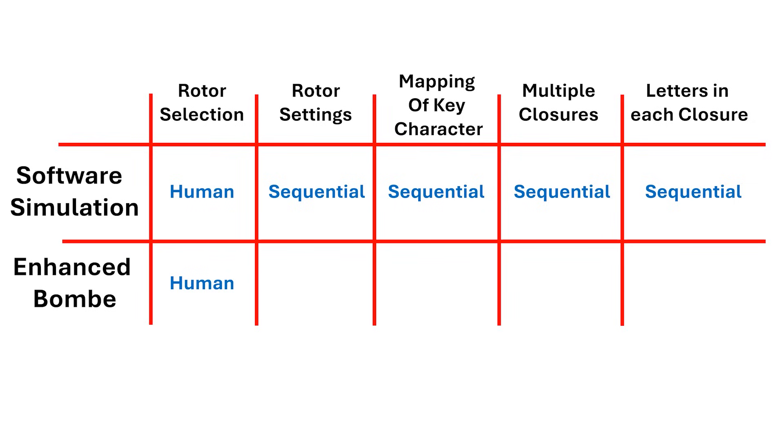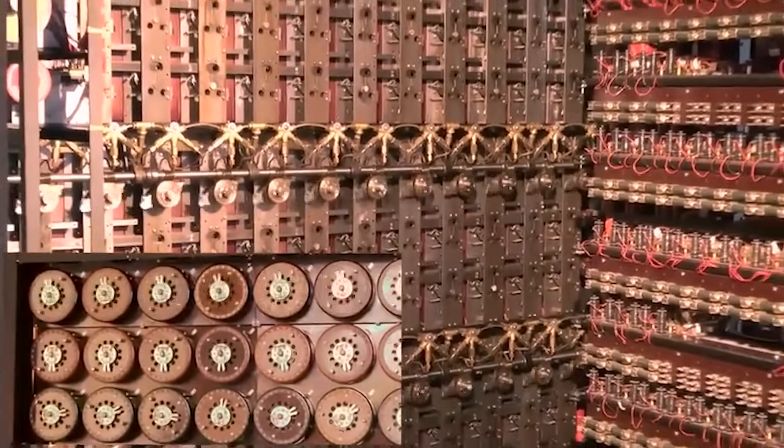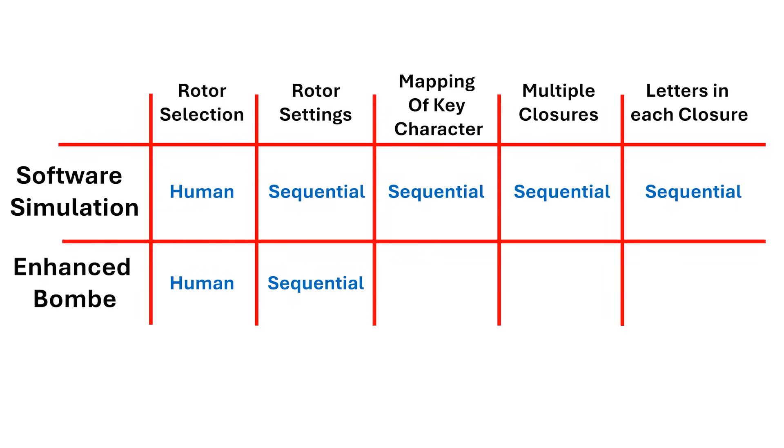Now, the bomb went through 26x26x26 rotor setting sequentially by mechanically rotating the drums. This is what we see happening here. Each one goes from AAA to ZZZ, and this really represents the state of the machine.